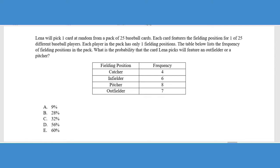If we look at this question, we can see it gets a little bit wordier. There's a little bit more going on here. Notice that the answer choices are in percentage form and we have a frequency table. We talked about frequency tables in a previous video—how they can be used in percentages and averaging problems. We can see now frequency tables are being used in probability. It says Lena will pick one card at random from a pack of 25 baseball cards. Each card features the fielding position for one of 25 different baseball players. Each player in the pack has only one fielding position. The table below lists the frequency of fielding positions in the pack. What is the probability that the card Lena picks will feature an outfielder or a pitcher?